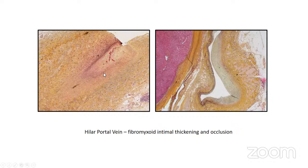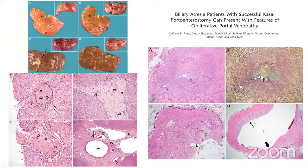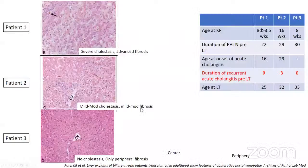Hilar portal veins show fibromyxoid intimal thickening and partial or complete occlusion in both cases. In a non-functioning KP, you have severe cholestasis, biliary cirrhosis, obliterative portal venopathy with normal arteries, and portal hypertension caused by parenchymal fibrosis. In a functioning KP, there is no cholestasis, variable fibrosis, obliterative portal venopathy, and portal hypertension caused by OPV rather than cirrhosis. We published a study on BA patients with successful portoenterostomy presenting with obliterative portal venopathy, proposing that portal hypertension in these patients is not due to cirrhosis, and that explants should be evaluated carefully for these lesions.